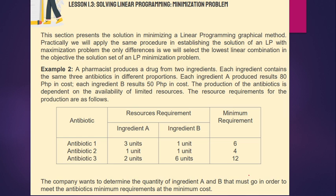Example number 2: A pharmacist produces a drug from 2 ingredients. Each ingredient contains the same antibiotics in different proportions. We have antibiotic 1 to 3, and different ingredients—ingredient A and ingredient B. Each ingredient A costs 80 pesos. Each ingredient B costs 50 pesos. The production of the antibiotic is dependent on the availability of limited resources.